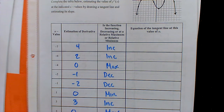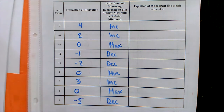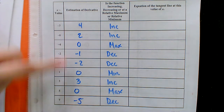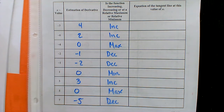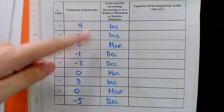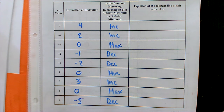Yesterday we were completing this table on page 101 where we were analyzing a tangent line drawn on the graph and estimating the slopes. These were roughly the numbers we got. We filled in the behavior of the graph — is it increasing, decreasing? Do you have a max or a min? We also practiced writing the equation of a tangent line. Today we're going to look at these two columns more in depth and try to make some relationships or connections within this table.